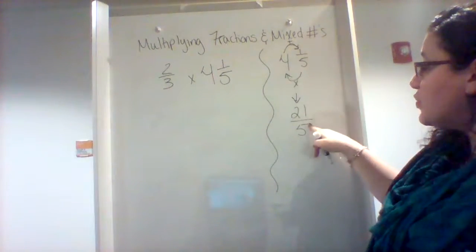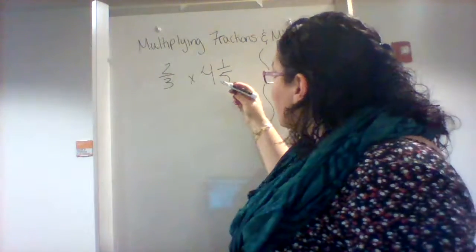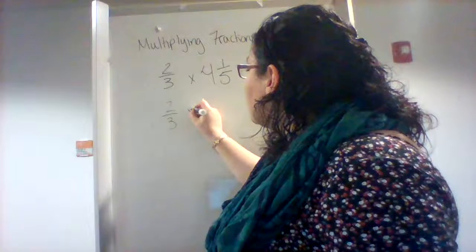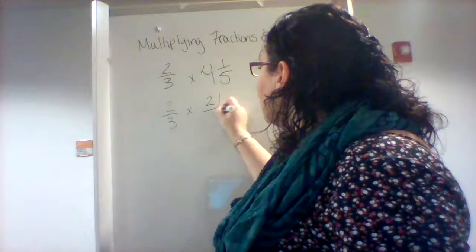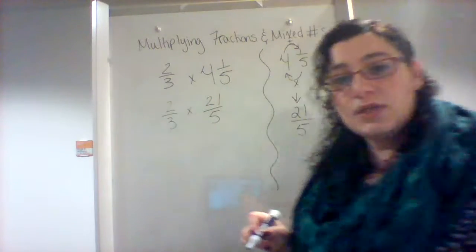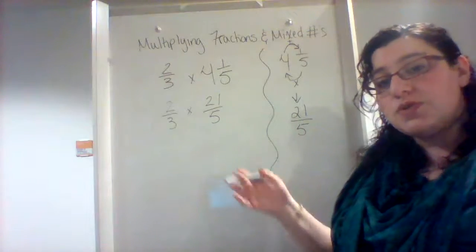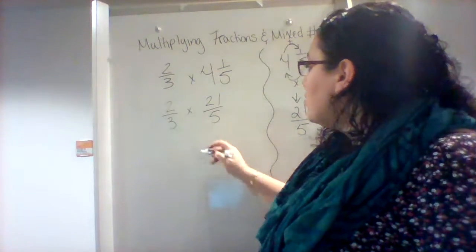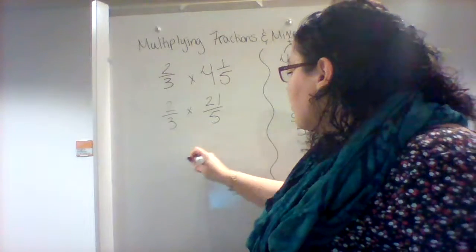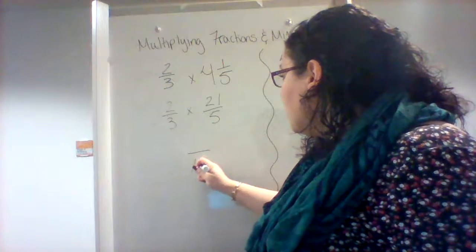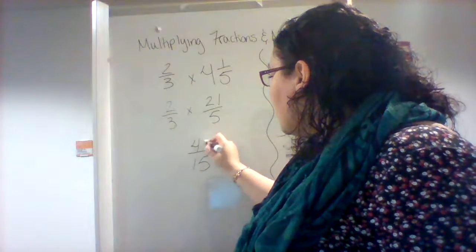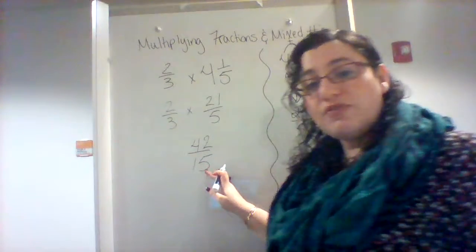So now that I've changed it into an improper fraction, I'm going to rewrite my multiplication problem as 2 thirds times 21 fifths. And now we can do the stuff that you were used to, just multiply numerator times the numerator and denominator times the denominator. So I would multiply straight across. 3 times 5 is 15, and 21 and 2 is going to be 42. So I have 42 fifteenths.